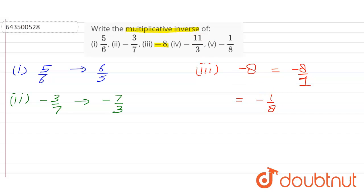The fourth part is -11/3. So the multiplicative inverse of this one is -3/11. Just find out the reciprocal, nothing else. Now it's time to do the last one which is -1/8.